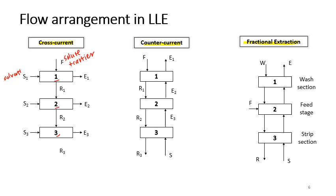In cross-current arrangement, you mix the feed with fresh solvent to get extract and raffinate. The raffinate is then taken to the next stage and mixed with another fresh batch of solvent to reach equilibrium, producing a second extract and raffinate. This continues through each stage — cross-current uses a fresh batch of solvent at every stage.